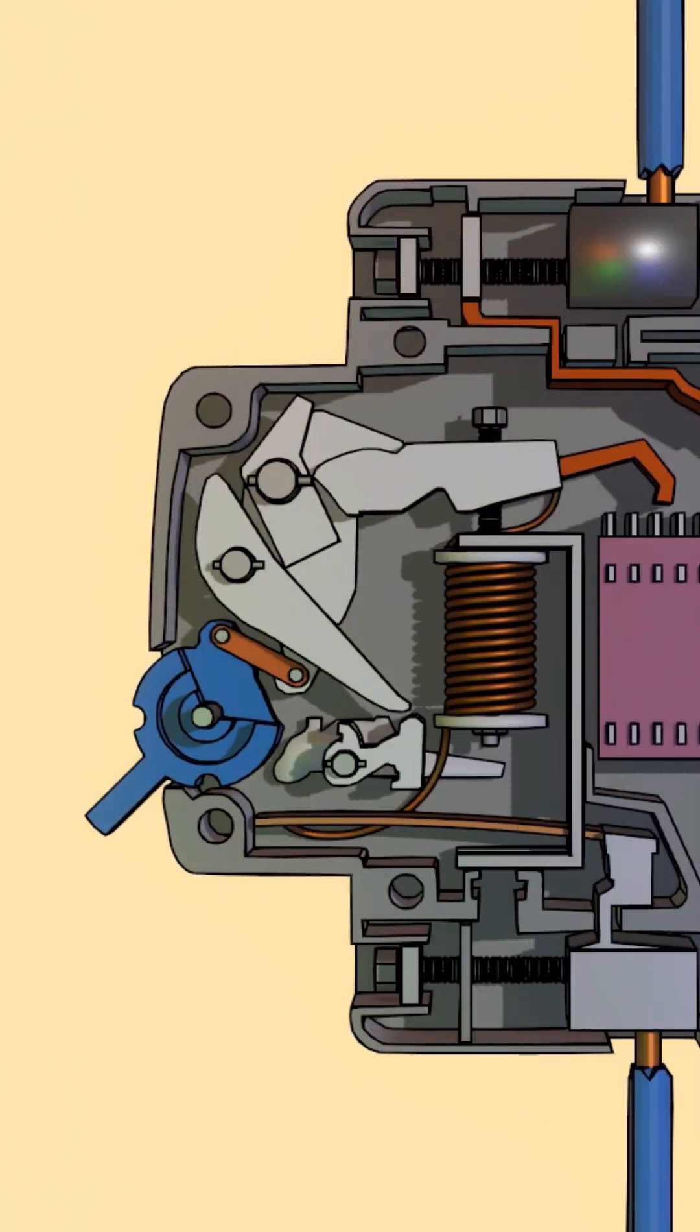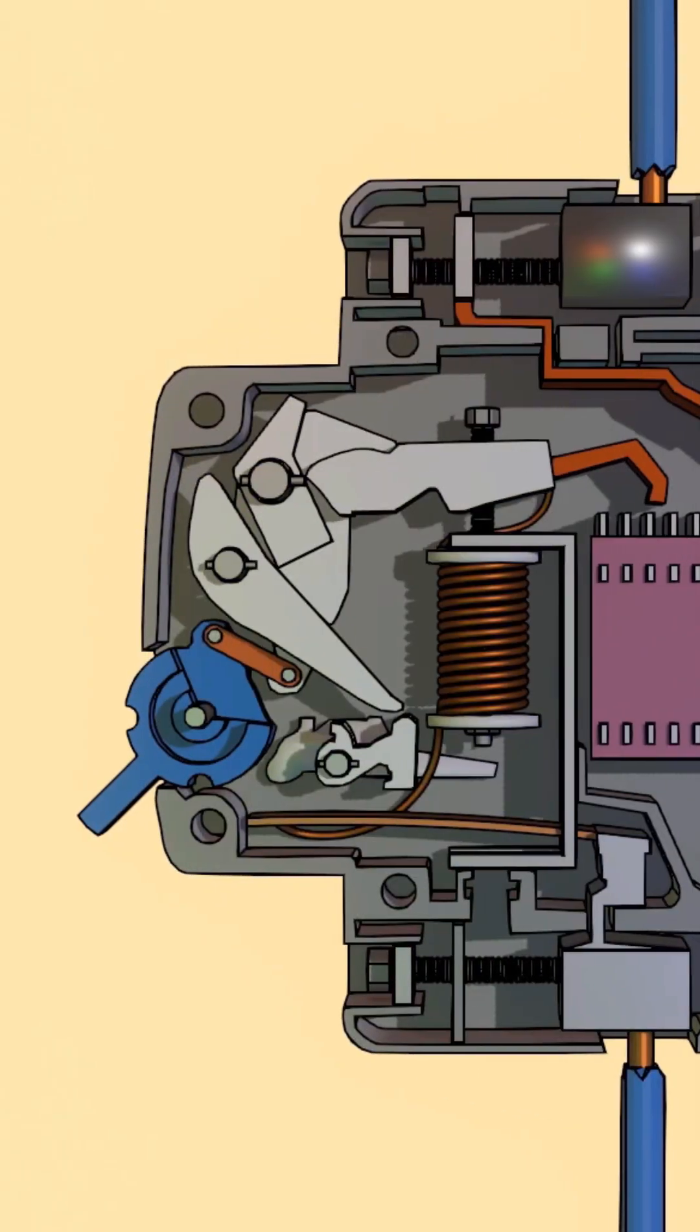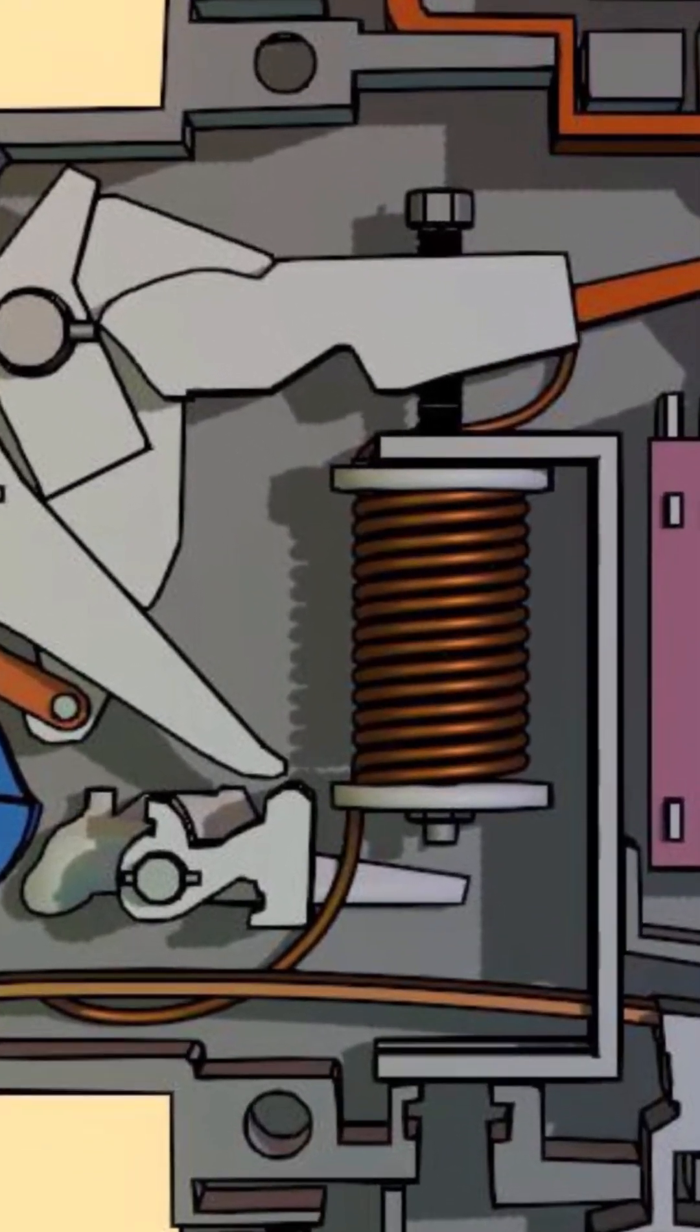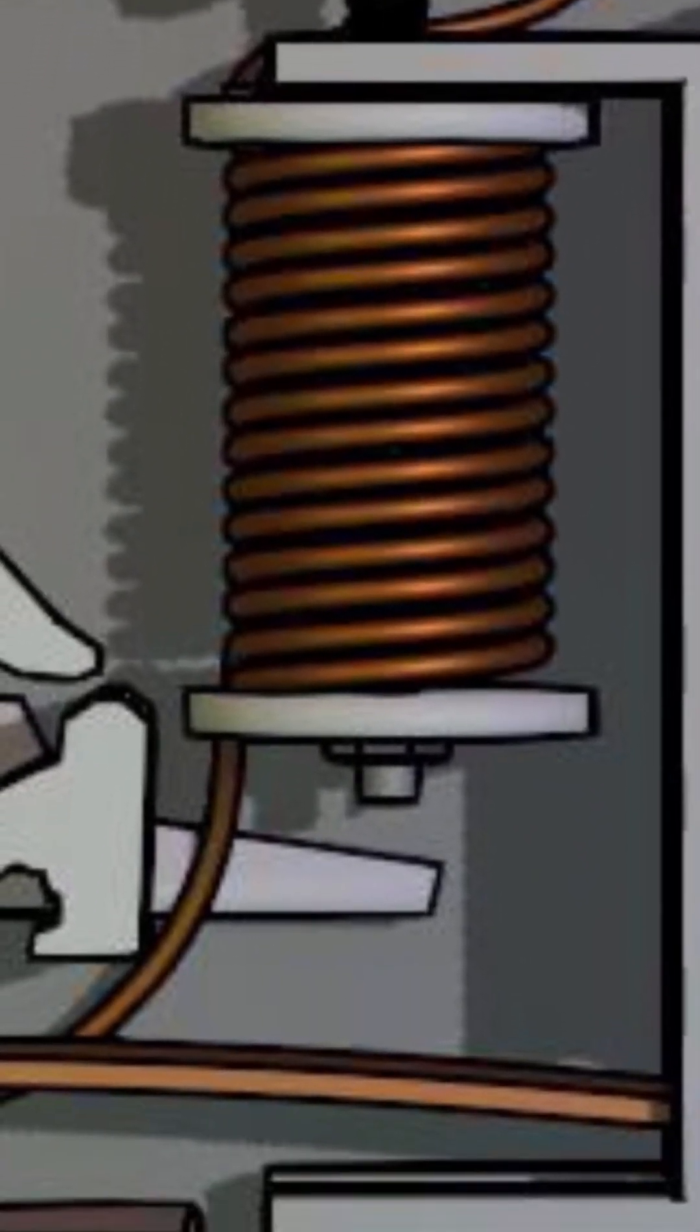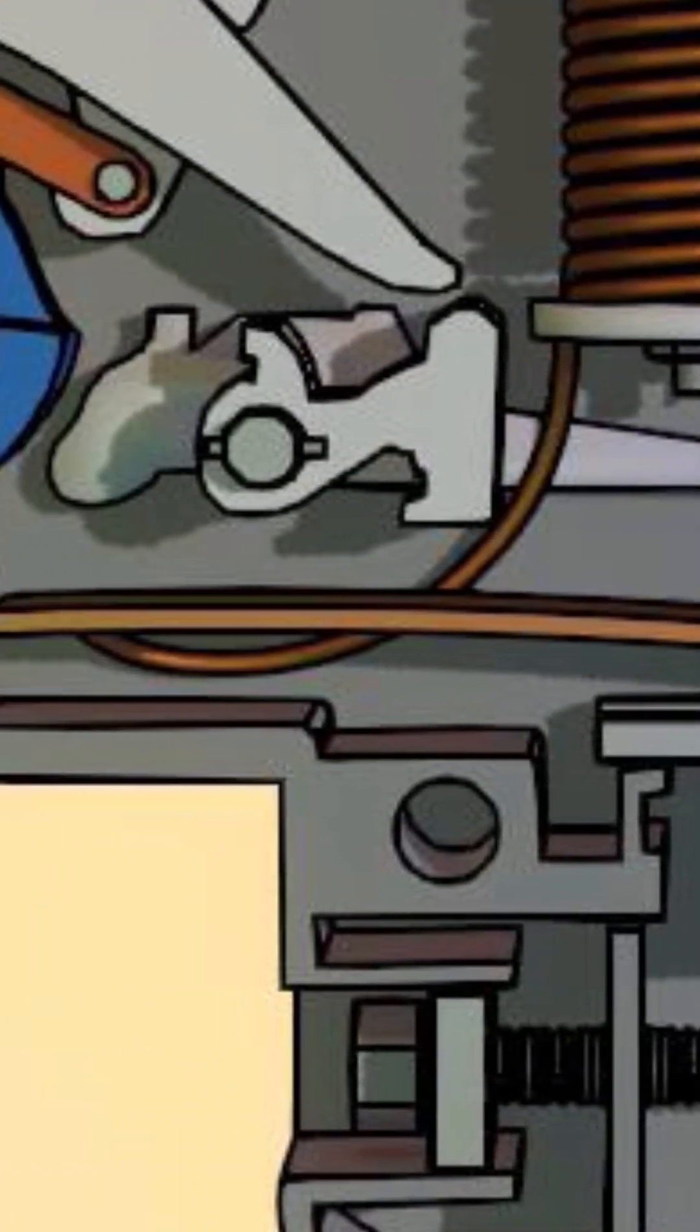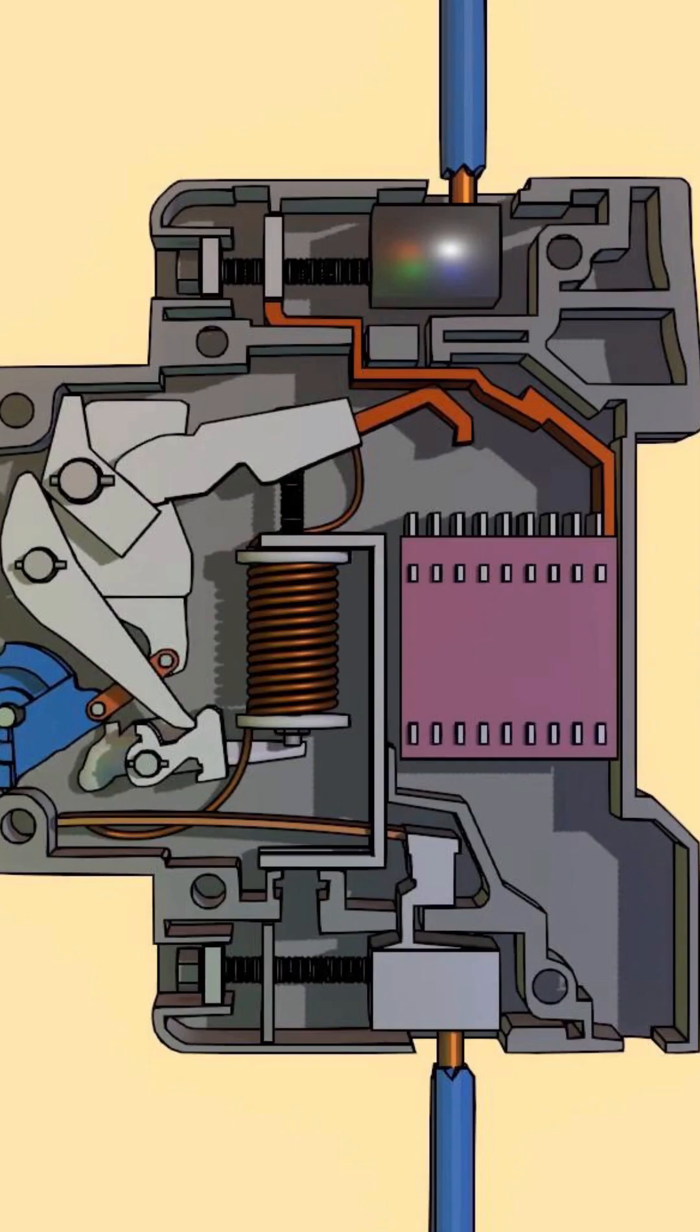Constructional details of an MCB or miniature circuit breaker. It has two arrangements: one is an inductor connected in series with the circuit, another is a bimetallic thermo element that is also connected in series with the circuit.